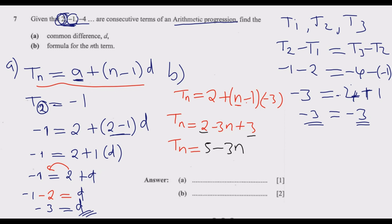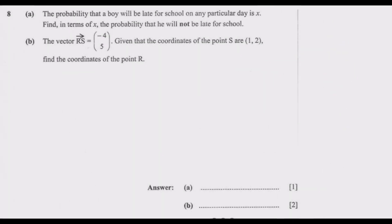So T_n equals 5 minus 3n. This is the formula for the nth term. For example, if n equals 1, we get 5 minus 3 times 1 equals 2, which matches T1. If n equals 2, we get 5 minus 3 times 2 equals 5 minus 6 equals negative 1, which matches T2. So this is how you answer this question.